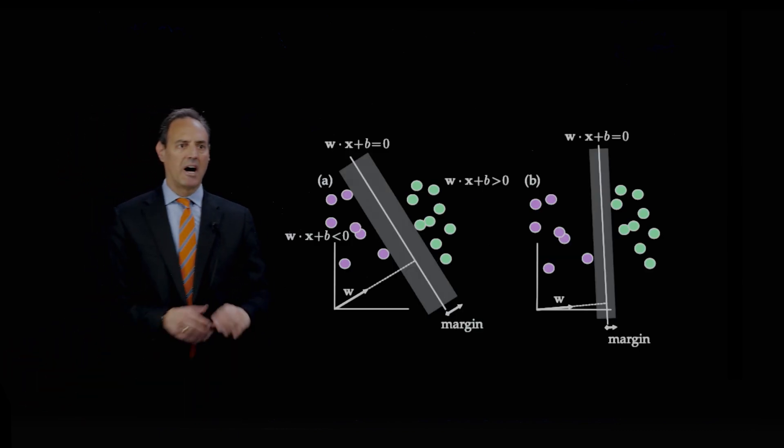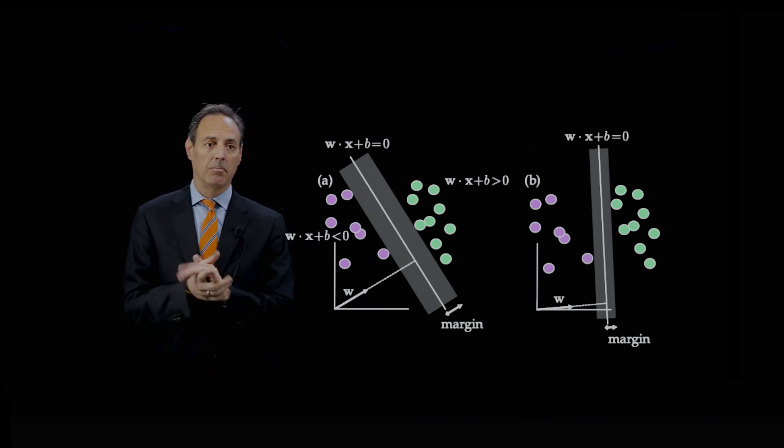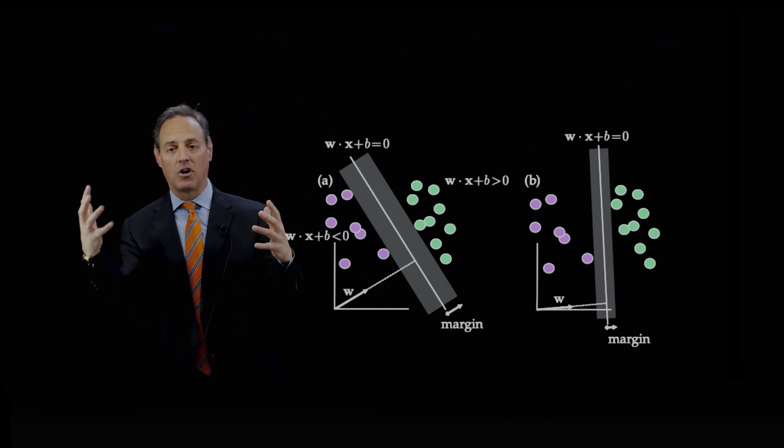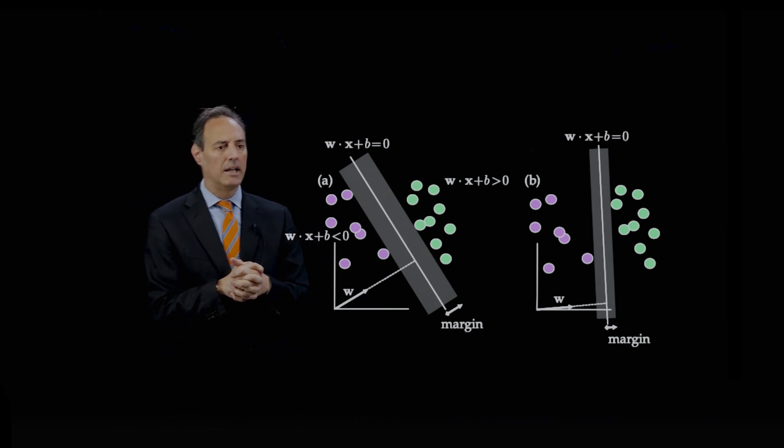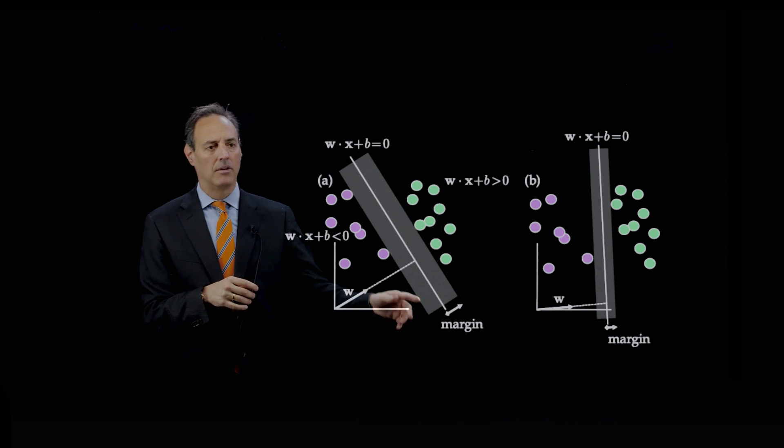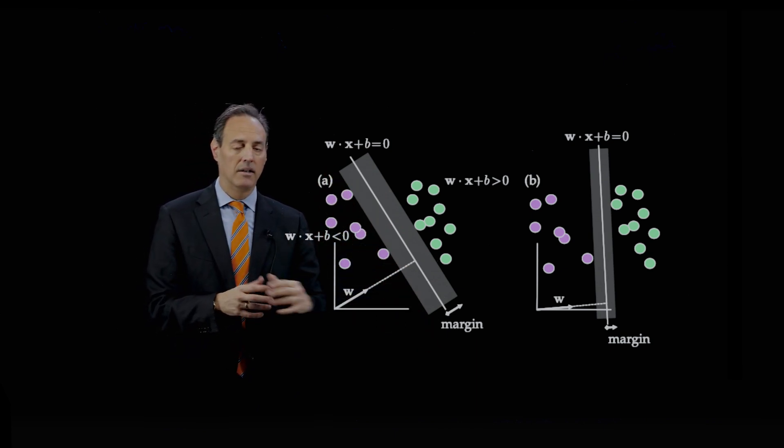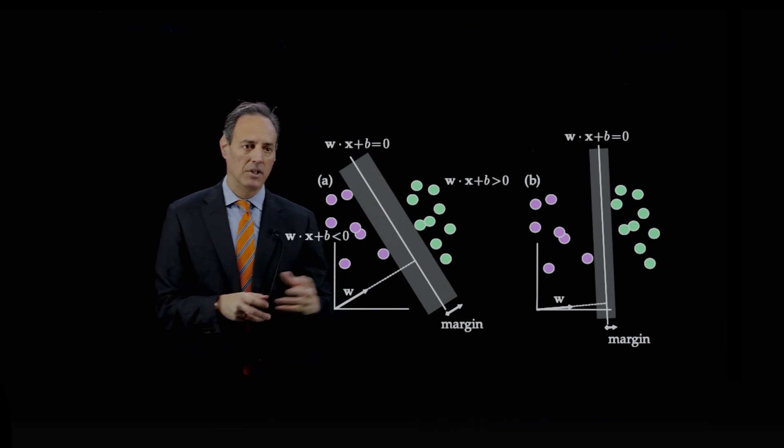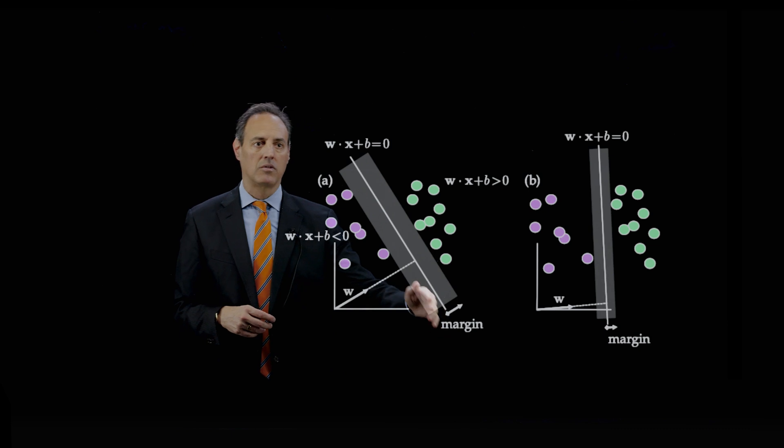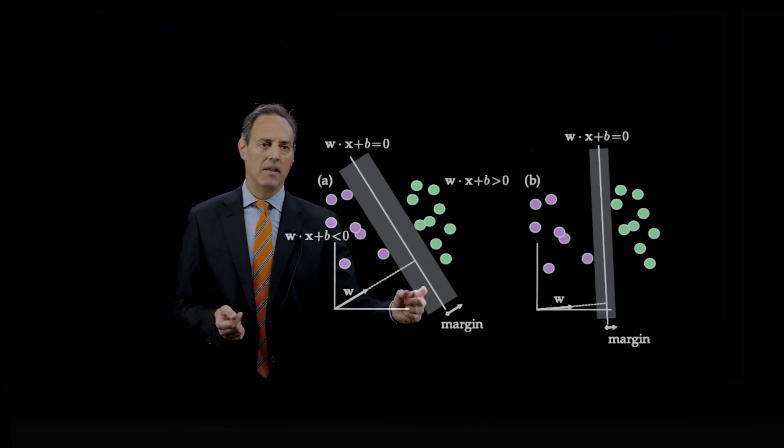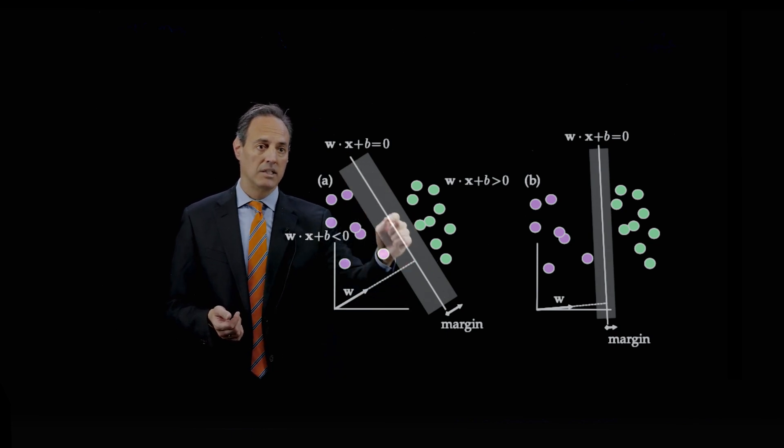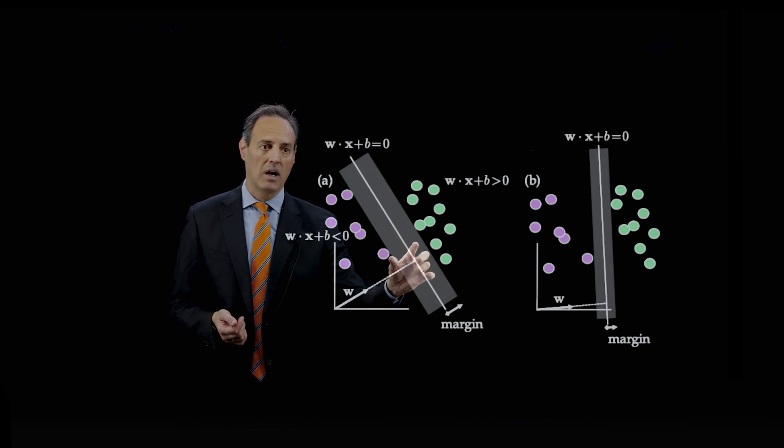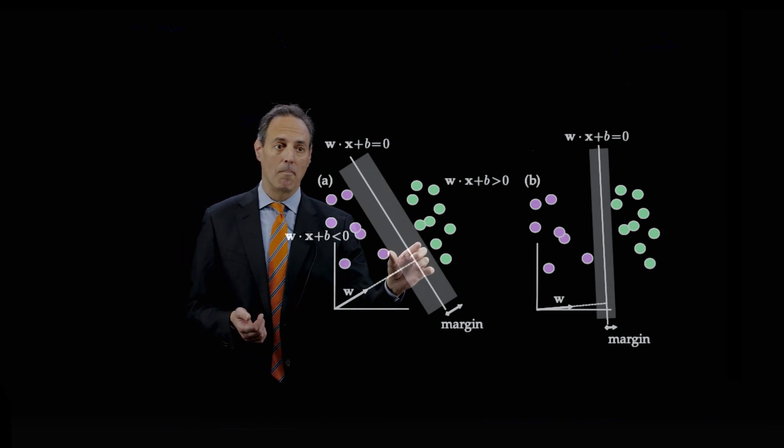The idea here is the following: I have data with magenta and green balls. The goal is to find a vector, a hyperplane, or in this case since it's two dimensional just a line that separates those green from magenta balls. What's interesting about the support vector is this W which tells me how to characterize this line. I want to not only find this line but maximize this margin and penalize everything to keep those balls out of the margin.